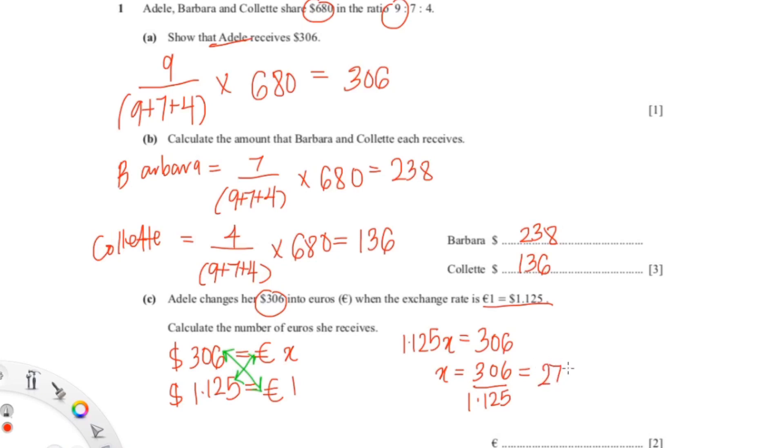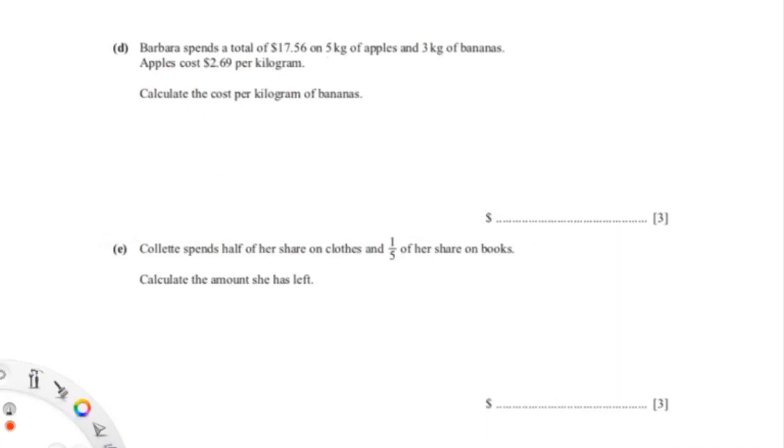272 euros. So the next question is asking about 5 kg of apples at $2.69 per kilogram. So apples would be 5 kg equals x dollars,